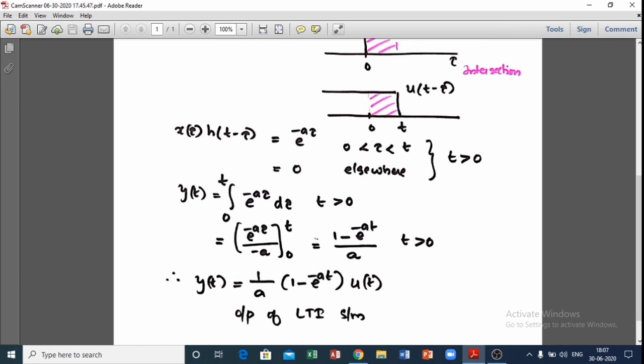The final result: y(t), that is the convoluted output, the response of the CT system, is given by (1/a)(1-e^(-at)) for t greater than 0. This is the output of the LTI system.